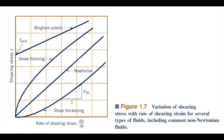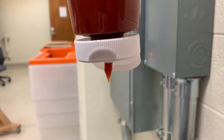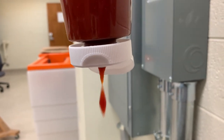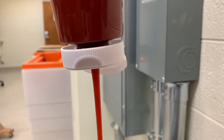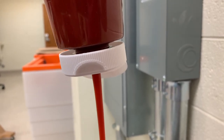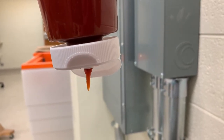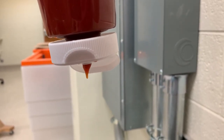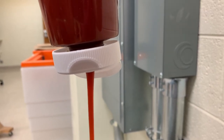For shear thinning fluids, the apparent viscosity decreases with increasing shear rate. The harder the fluid is sheared, the less viscous it becomes. Tomato ketchup, for instance, stays almost solid in the bottom of a plastic bottle until it is squeezed, at which point it squirts out easily. It is shear thinning.